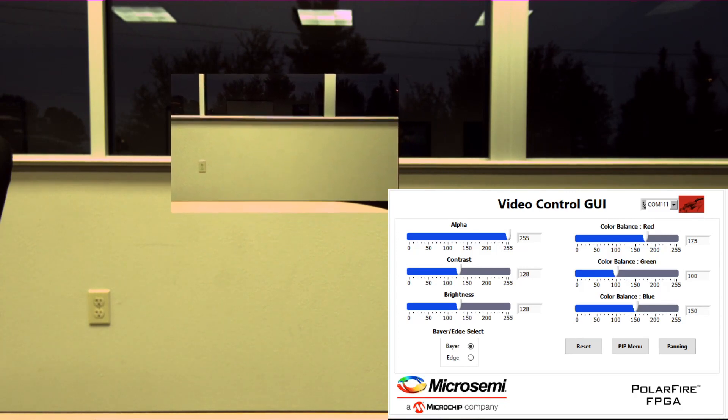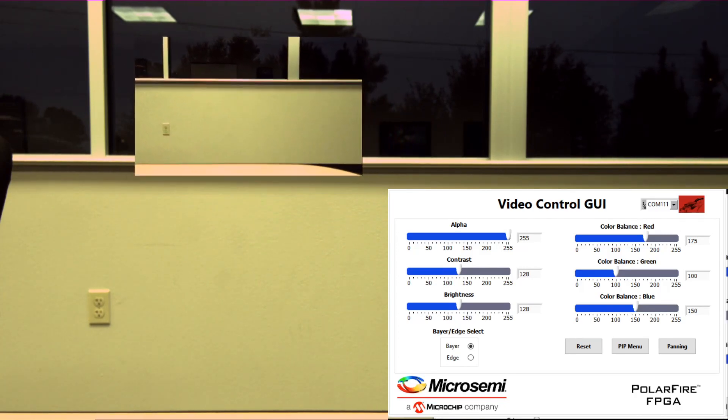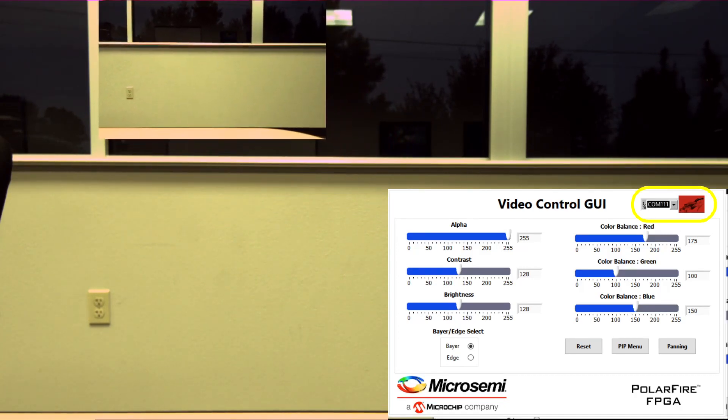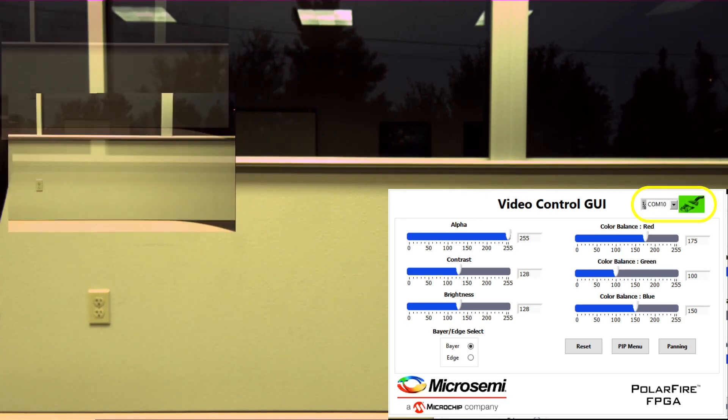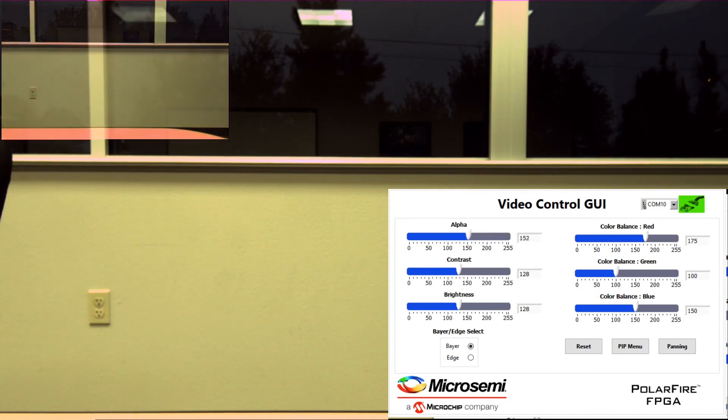Locate the installed GUI program and run it. Select the appropriate COM port from the drop-down list. Click the image to connect. From here, you can now make adjustments to the image such as alpha, contrast, brightness, as well as color balance.